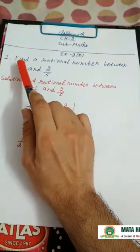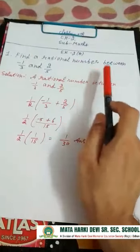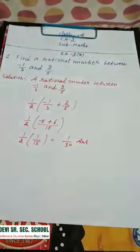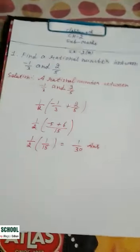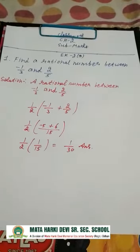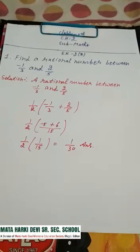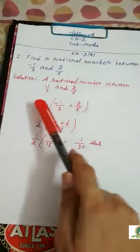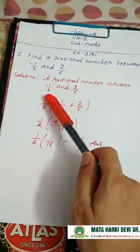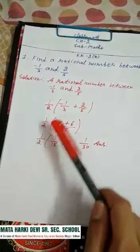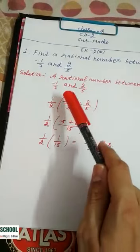Question number 1: Find a rational number between minus 1 by 3 and 2 by 5. In this question, how to find a rational number between two numbers? Firstly, you add these two numbers and multiply by 1 by 2.